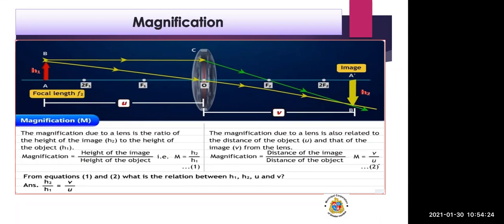The combined formula H2/H1 = V/U can also be used: if the image distance, object distance, and height of object are given, we can find H2. So we now have three magnification formulas: m = H2/H1, m = V/U, and H2/H1 = V/U.